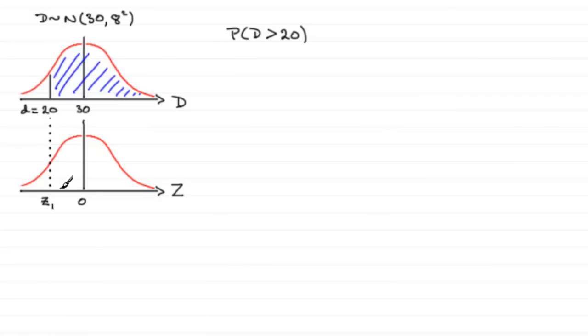Now, when it comes to working out what Z1 is, we use this transformation formula. The Z1 equals the observed value, often it's called x, but we're not dealing with x here, it's d in this case. So it's going to be observed value d minus the mean, which is 30, all over the standard deviation, which in this case is 8. And if you work this out, what you get is minus 1.25.